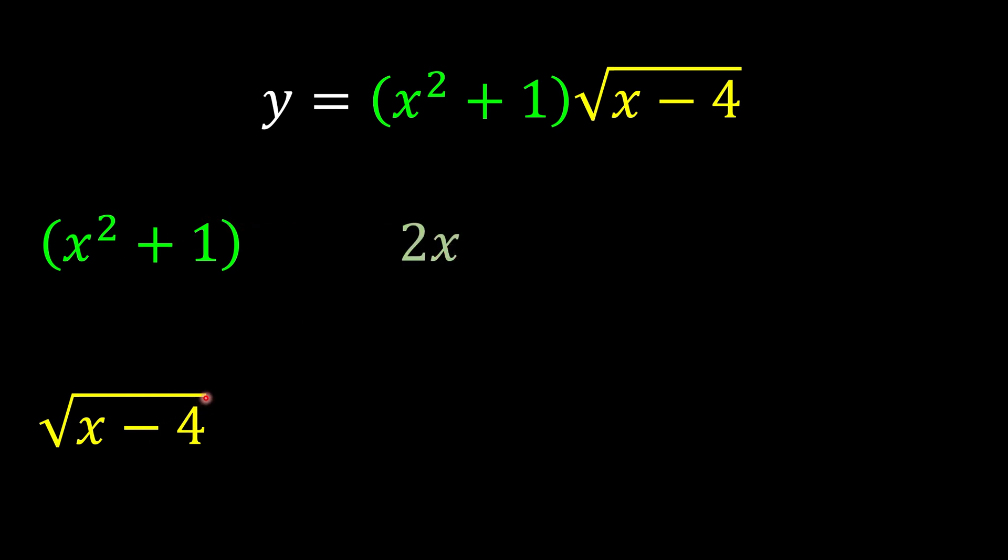And this one, if you want to differentiate it, we're going to change it to index form first. Then bring this to the front. You have 1/2(x - 4), half minus 1 is -1/2.